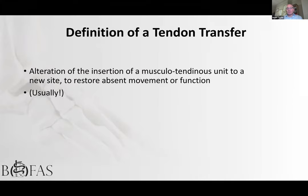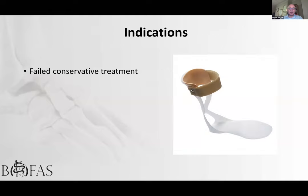Starting with the definition: a tendon transfer is the alteration of a musculotendinous unit, moving its insertion to a new site to restore absent movement or function. This covers the majority of what we think of as tendon transfers. It doesn't cover everything — for example, using a free tendon graft such as a hamstring doesn't quite fit, but it's a reasonable working definition.